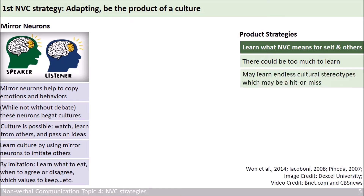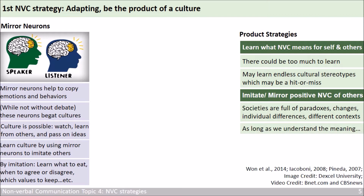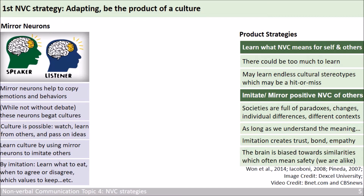So instead of learning endless cultural stereotypes, which may be a hit or miss, another adapting strategy of being the product of culture is imitating or mirroring the positive nonverbal cues of others. The societies around us are full of paradoxes, changes, and individual differences, and contexts change all the time. As long as we understand the meaning of nonverbal communication, imitation can create trust, establish bonds, and boost empathy. It makes others feel we are like them. We should not forget that the brain loves similarities, because it means safety.